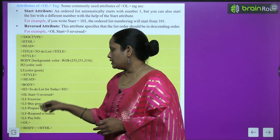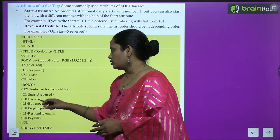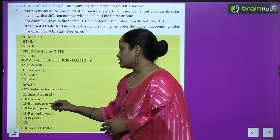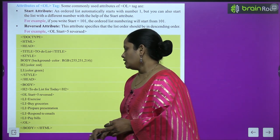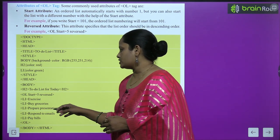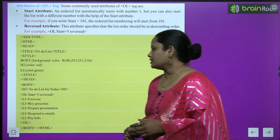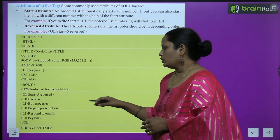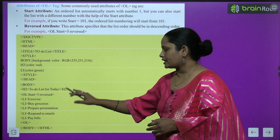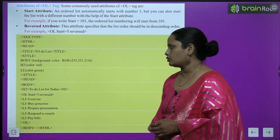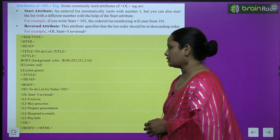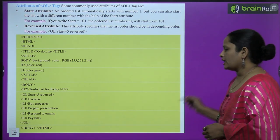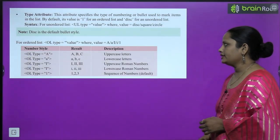In the ordered list with start='5' and reverse, we add the items: exercise, buy grocery, prepare presentation, respond to email, pay bills. This list goes from 'exercise' at the top down to 'pay bills', and it will start counting in reverse order from 5. Then we close the body and the remaining tags.